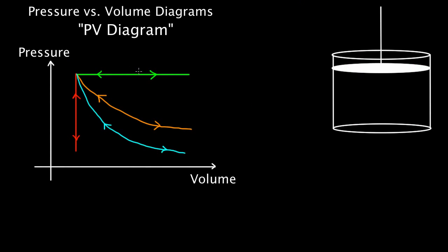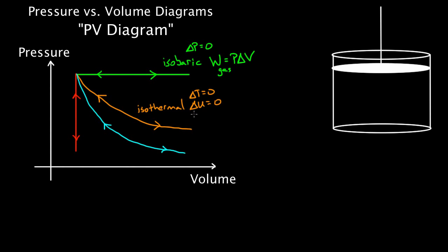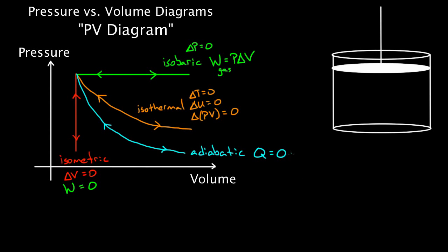Those are the four most common thermal processes on PV diagrams. The isobaric process has constant pressure, and work is easy to find as a rectangle (height times width). The isothermal process has constant temperature, constant internal energy, and constant P times V. The isometric process (also isochoric or isovolumetric) has zero change in volume, meaning no work is done. The adiabatic process has no heat flowing in or out of the system.